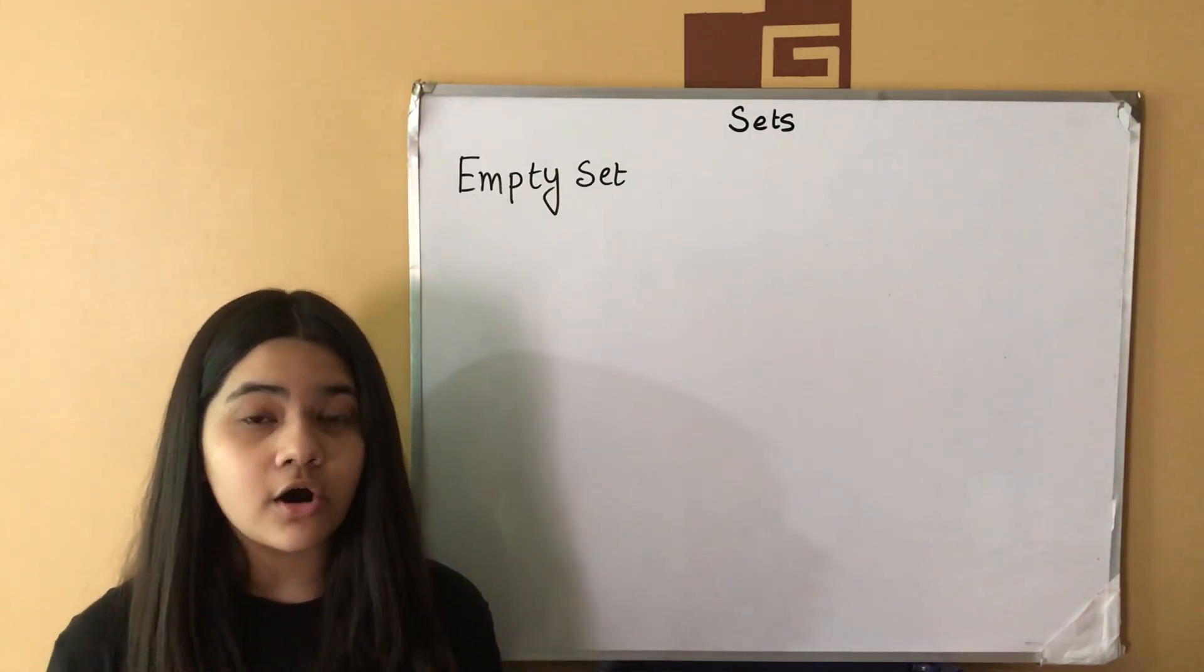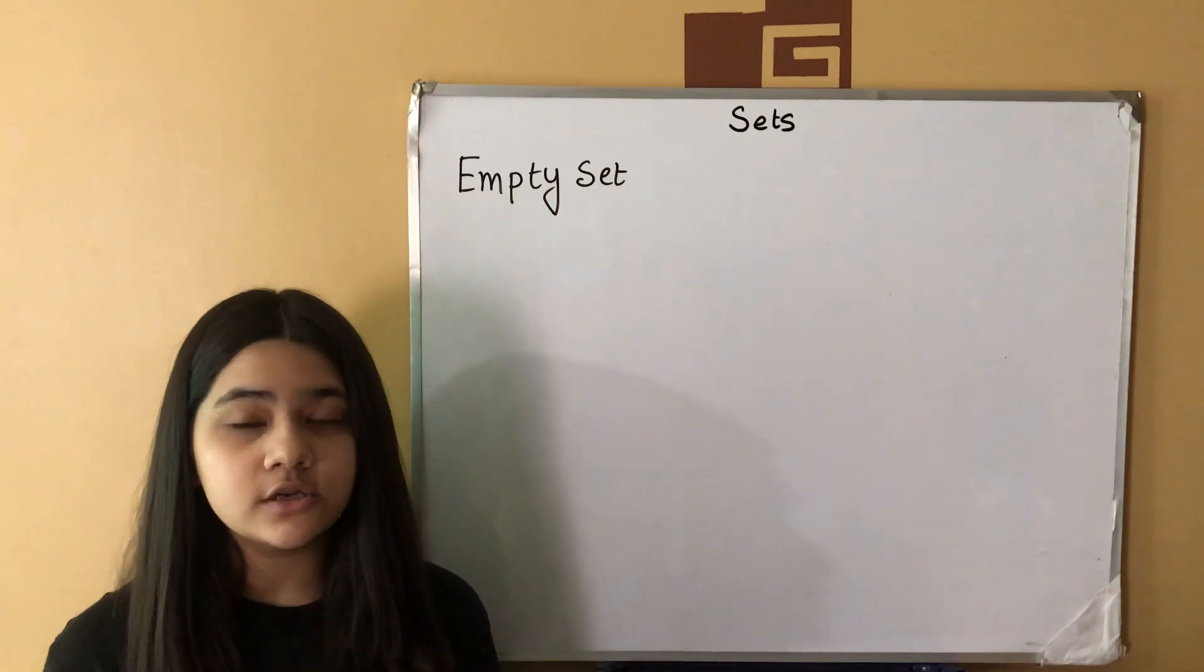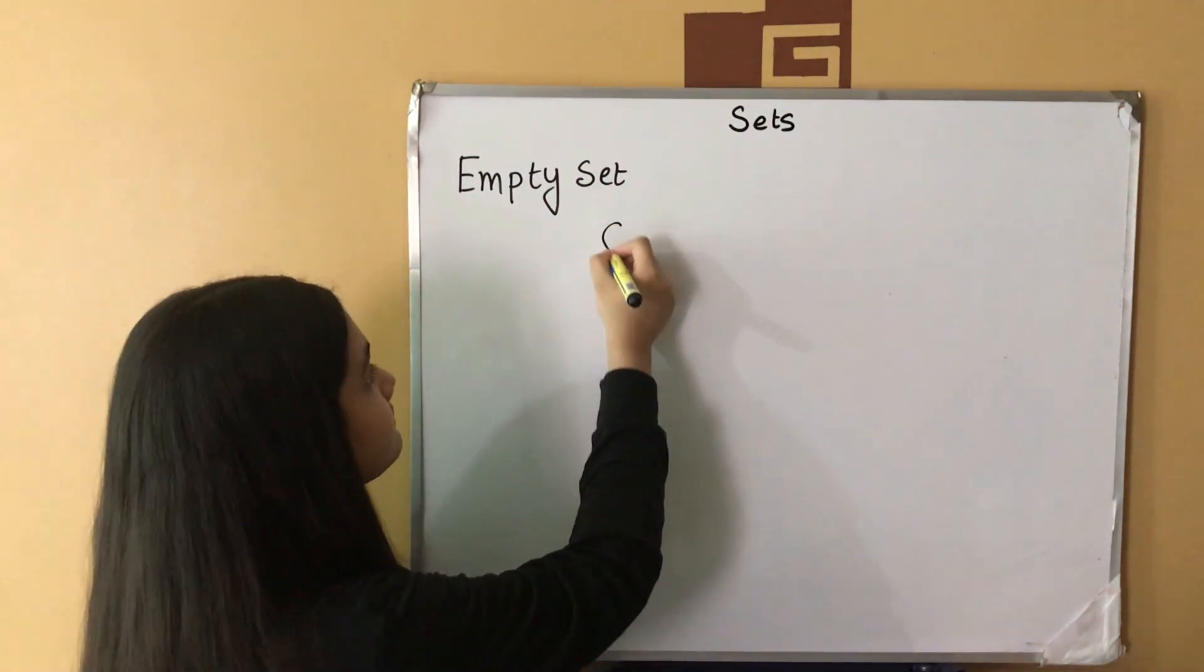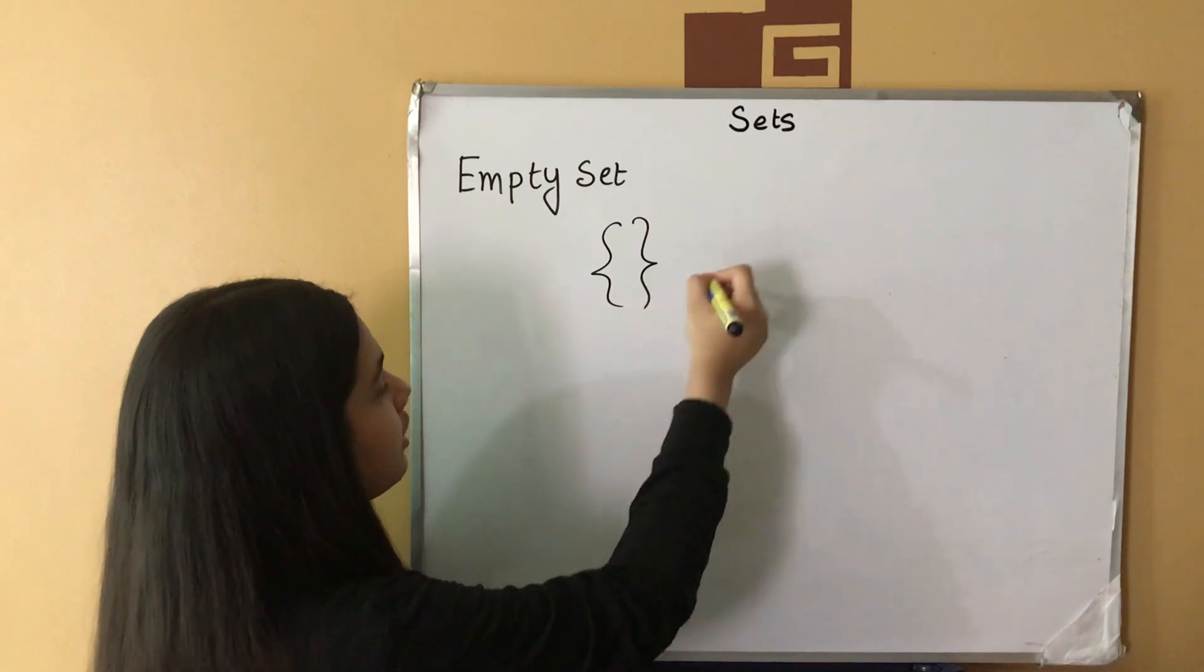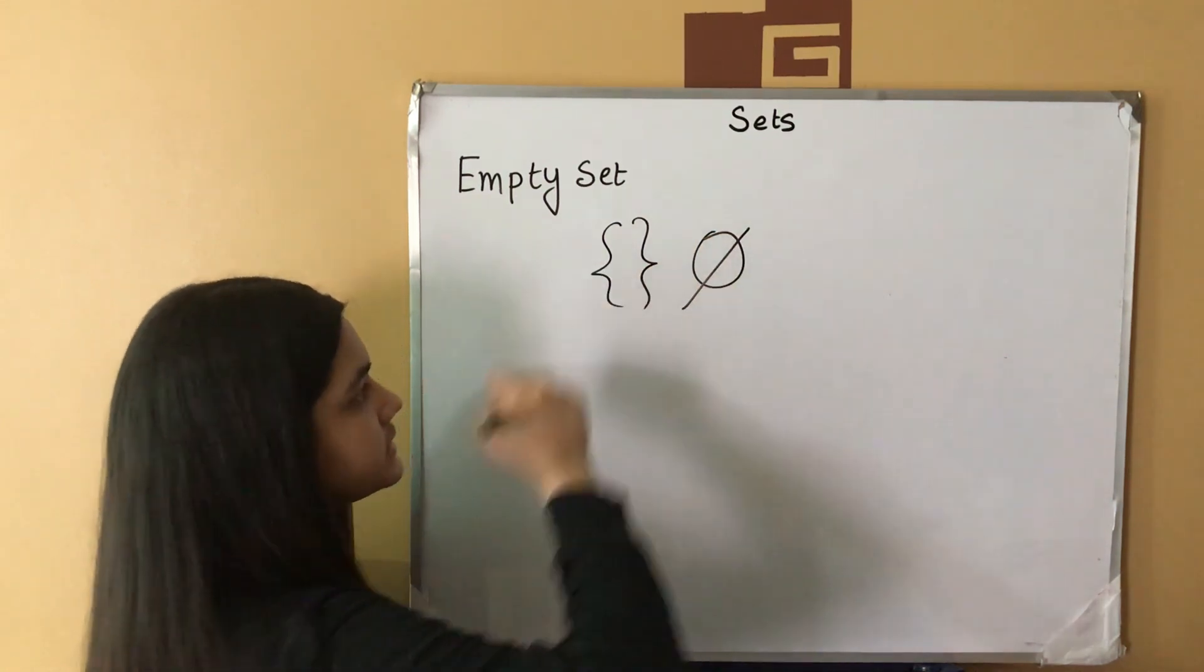Empty set or null set is a set containing no elements. It is denoted by empty second brackets or slash zero.